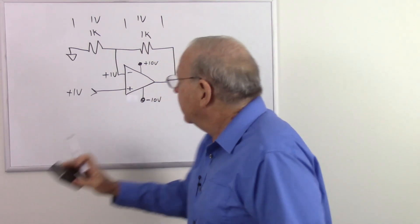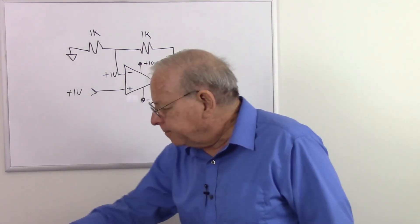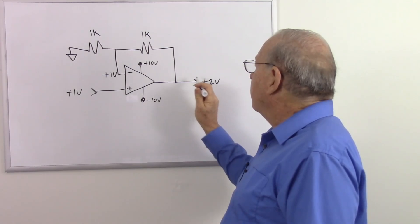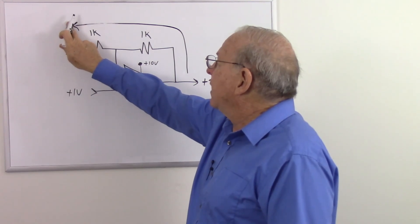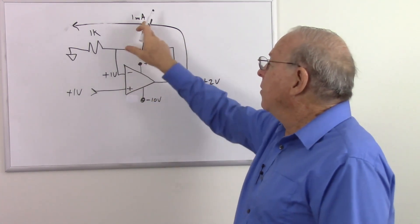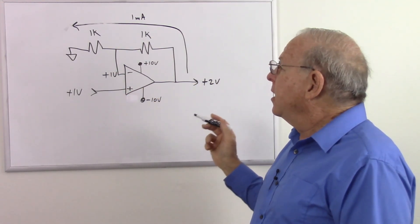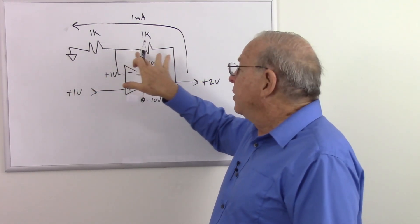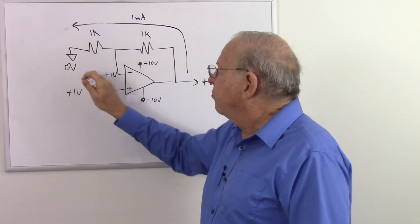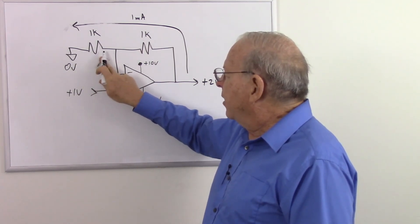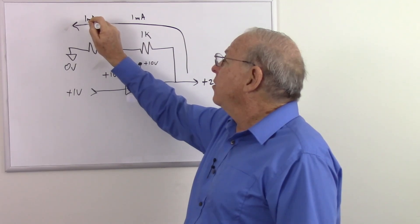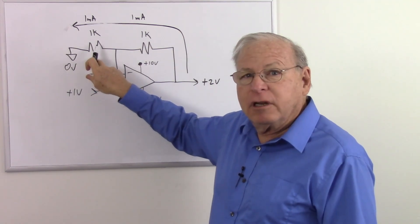Now let's look at the current through the circuit. We can figure it out two ways. One: we have 2 volts and 2k total, so by Ohm's law that's 1 milliamp. Two: in a series circuit the current is the same everywhere, and we know there's 1 volt across the 1k lower resistor — 1 volt over 1k is also 1 milliamp. So I know the current through both resistors by knowing the voltage and resistance here.